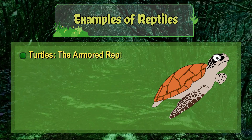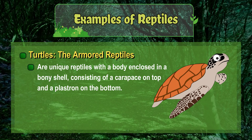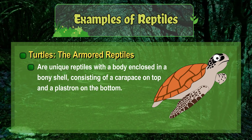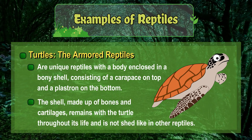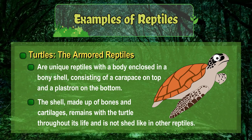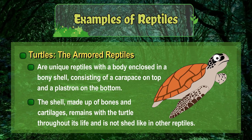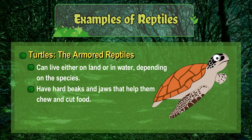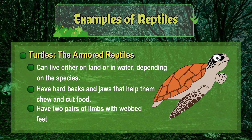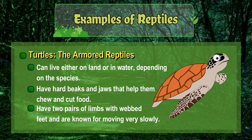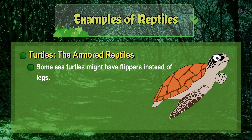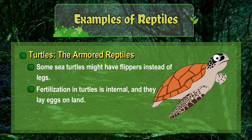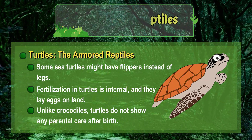Turtles are unique reptiles with a body enclosed in a bony shell consisting of a carapace on top and a plastron on the bottom. The shell, made up of bones and cartilage, remains with the turtle throughout its life and is not shed. Turtles can live on land or in water depending on the species. They have hard beaks and jaws, two pairs of limbs with webbed feet, and are known for moving very slowly. Some sea turtles have flippers instead of legs. Fertilization is internal and they lay eggs on land; unlike crocodiles, turtles do not show parental care after birth.